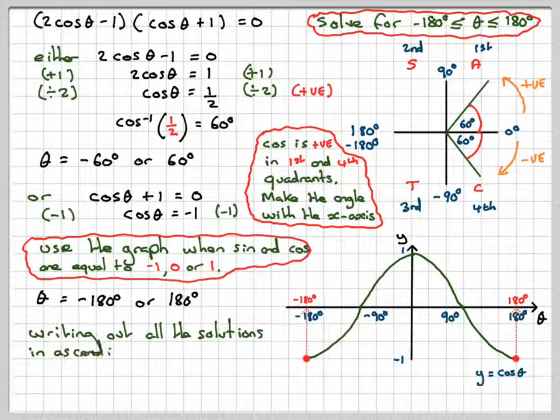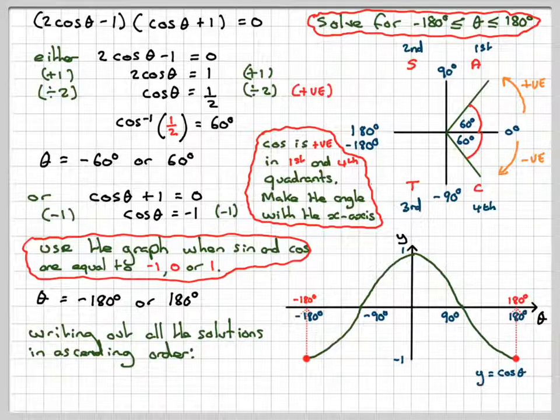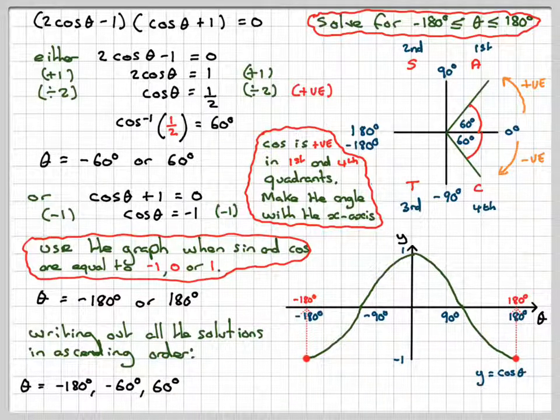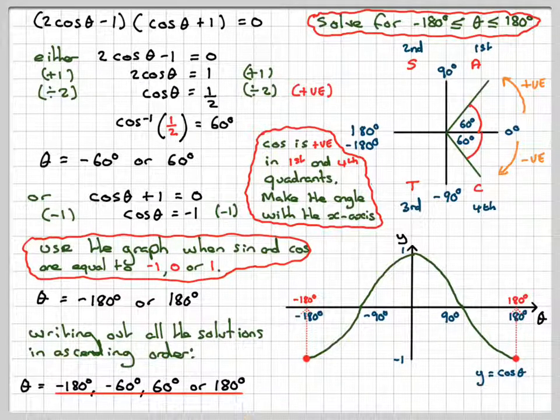So we're going to get all the answers. Writing out all the solutions in ascending order, we're going to have theta is minus 180, minus 60, 60 degrees, and 180 degrees. You must make sure you solve it between the range given in the question.